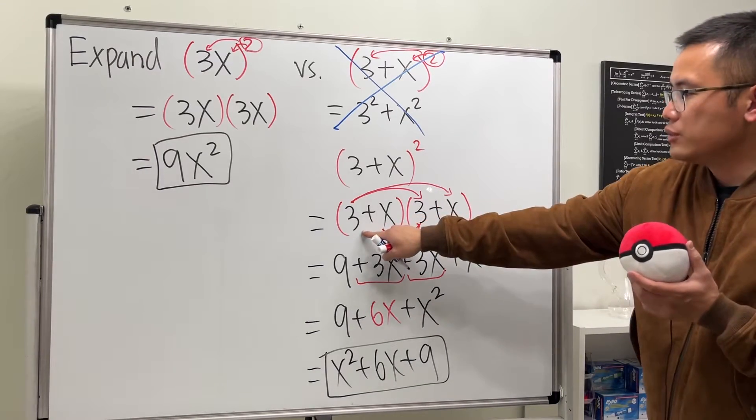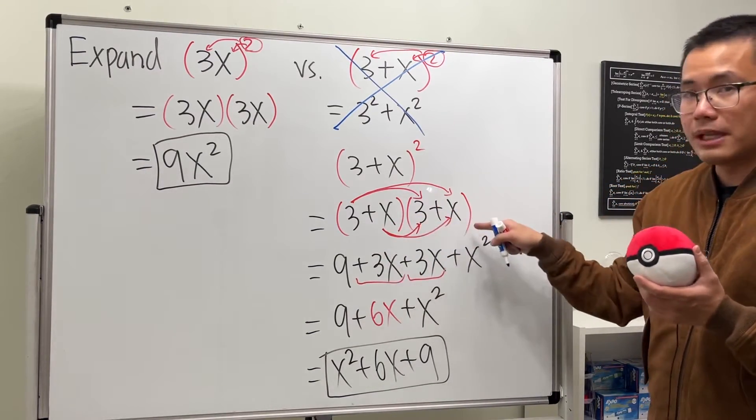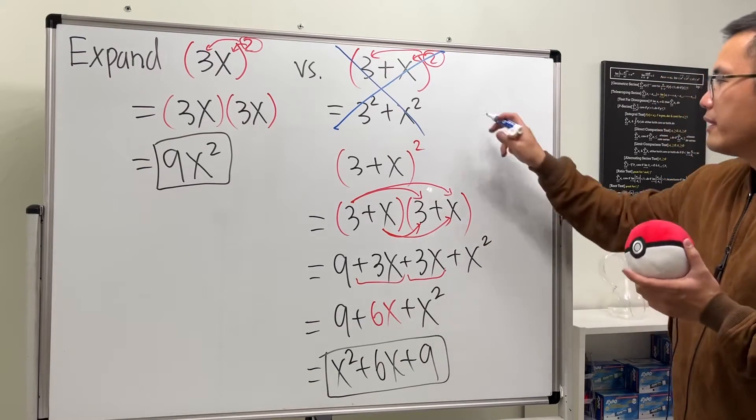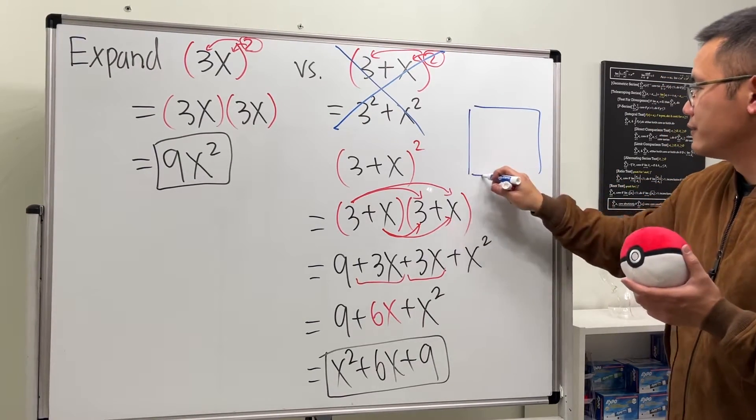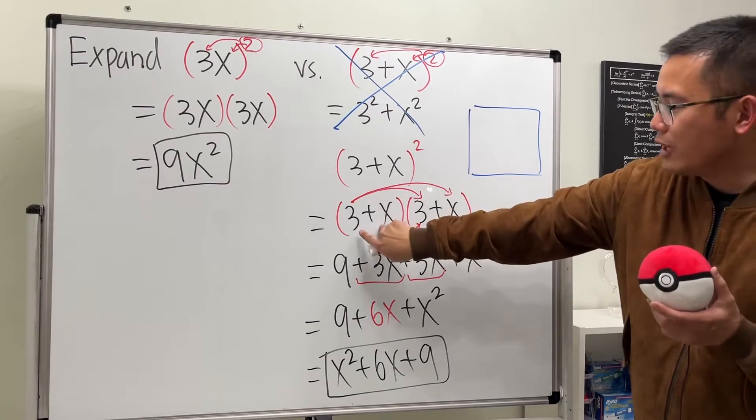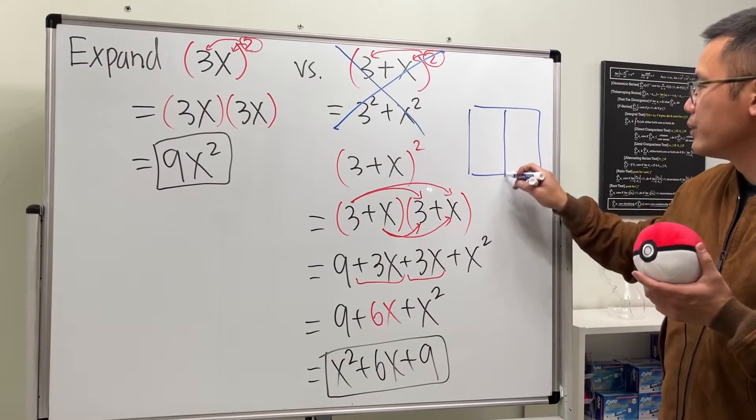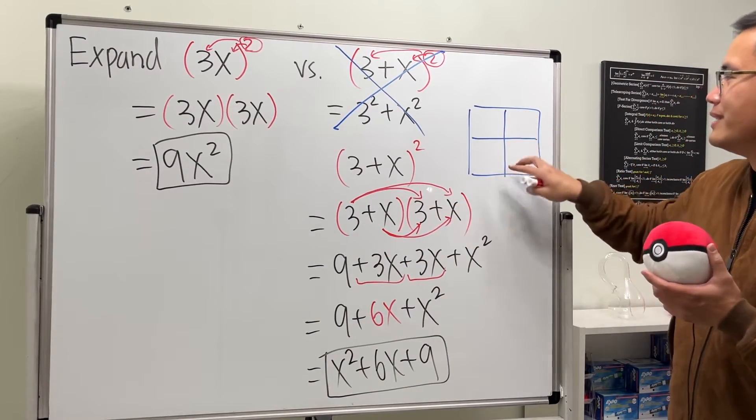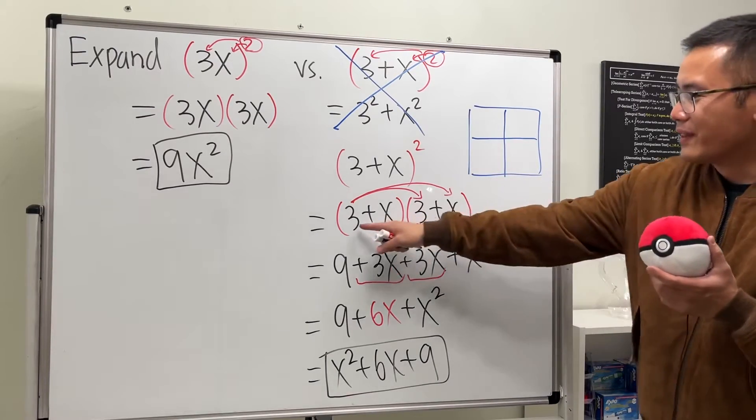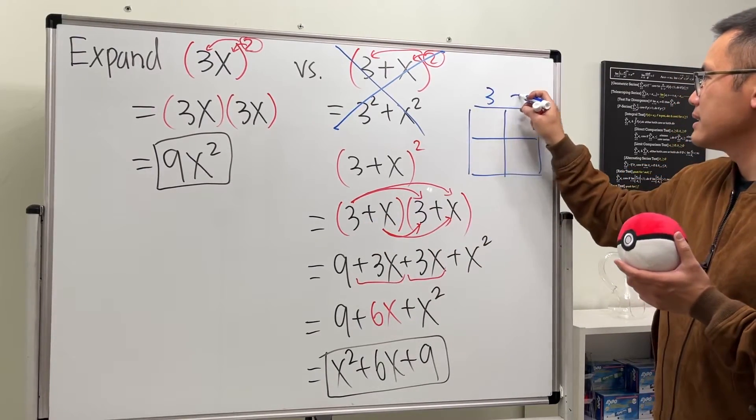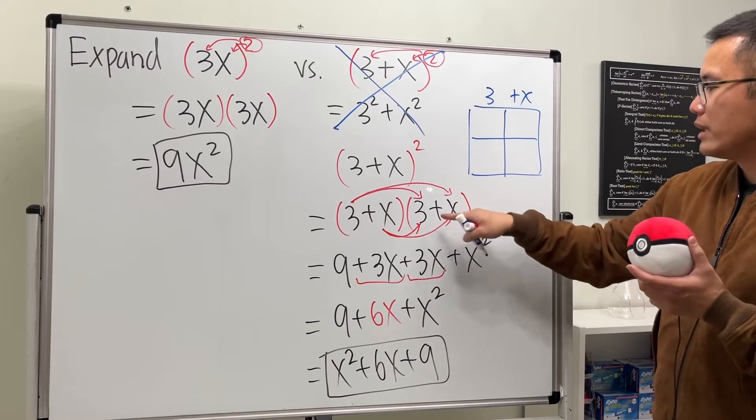So here's the box method that will really help you understand how you can multiply this. So take a look: (3 + x) times (3 + x). Box method, of course you draw boxes. So this is the first box, but we have two terms times two terms, so break it into two and two.